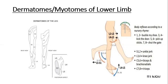For the movements of the foot at the ankle joint and subtalar joint: inversion of the foot involves L4 and L5. Dorsiflexion of the foot at the ankle joint involves L4, L5, and S1. Eversion of the foot involves L5 and S1. Extension of the toes at the metatarsophalangeal joint involves L5. Plantar flexion of the foot at the ankle joint involves S1 and S2.